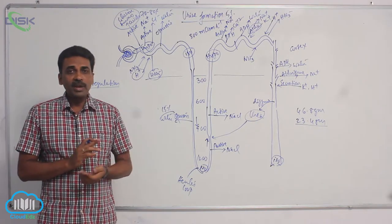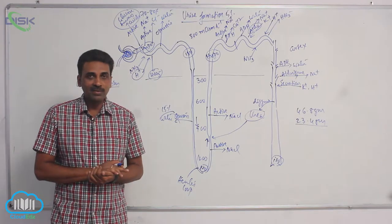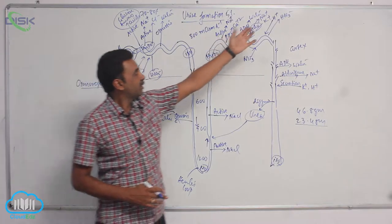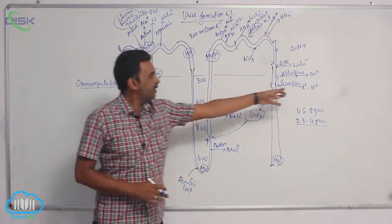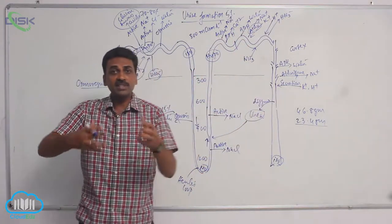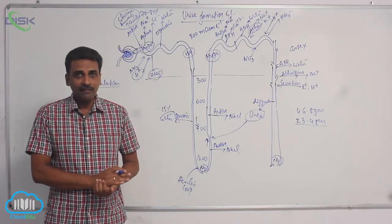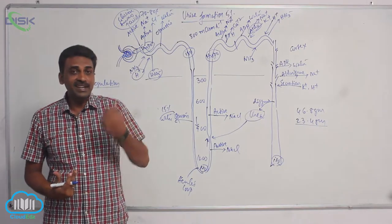The kidneys are also maintaining acid-base balance. H plus ions - extra H plus ions are collected and pushed outside. If H plus ions are not pushed outside, when they are retained in body, acidity increases.